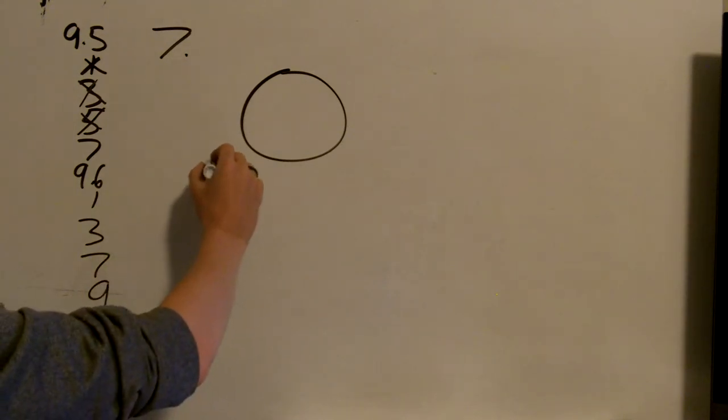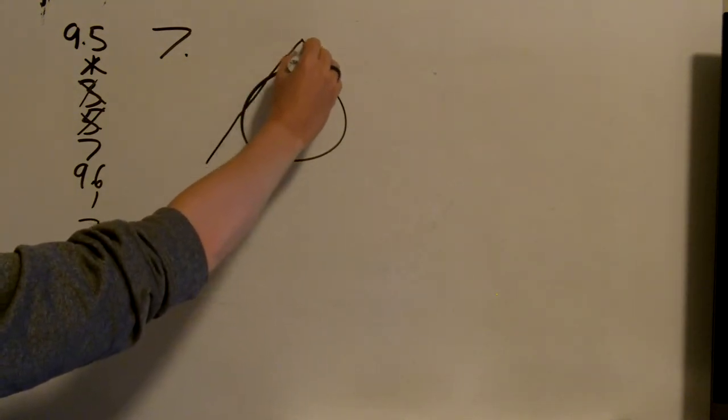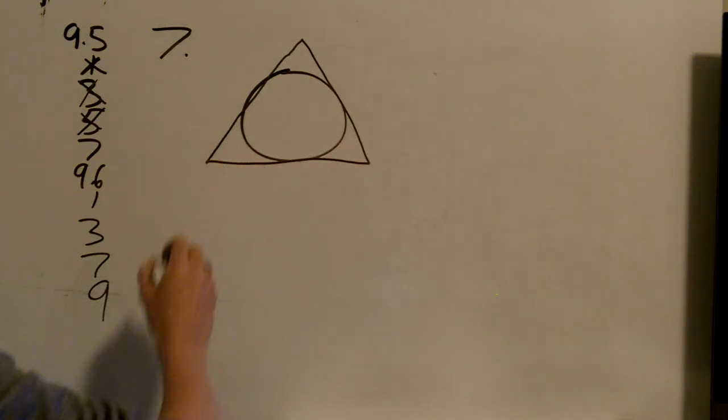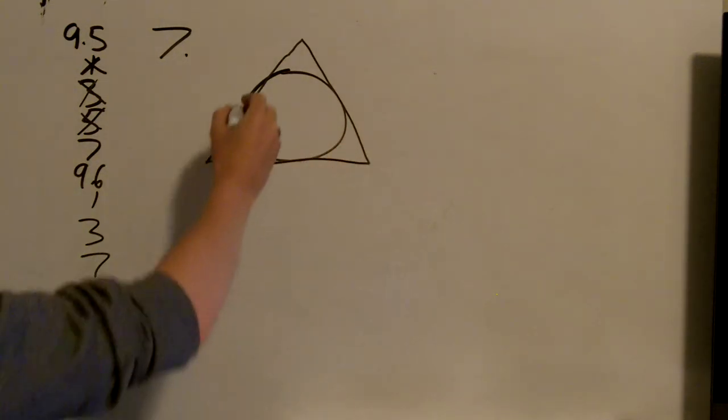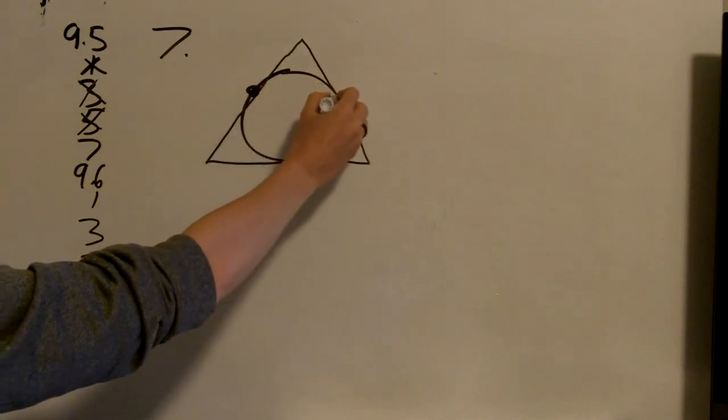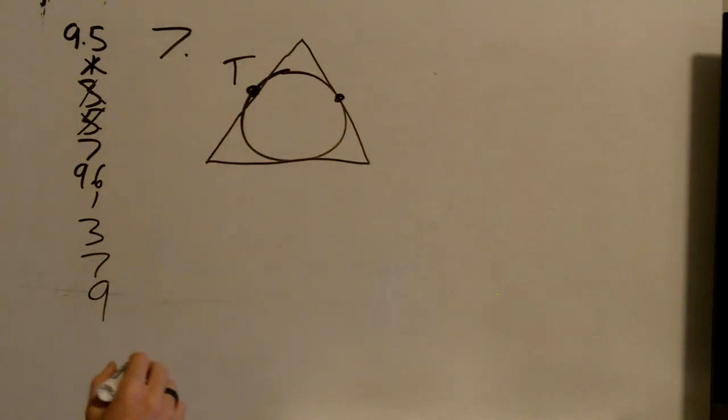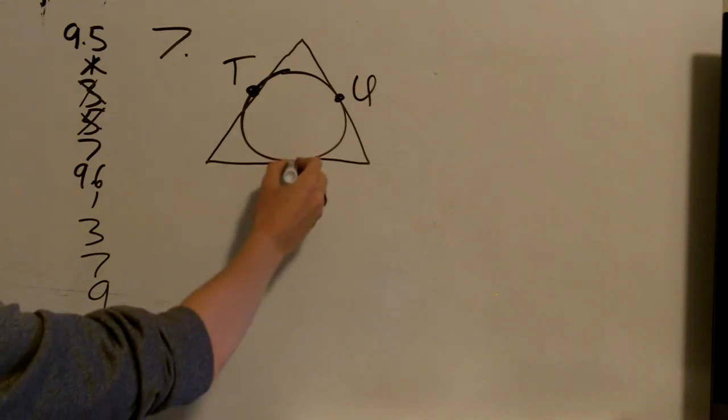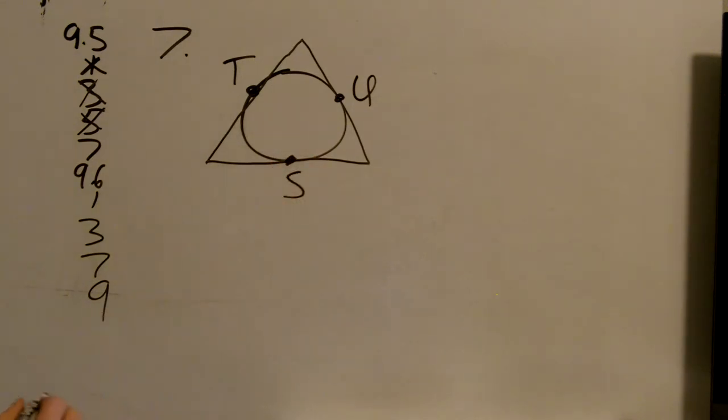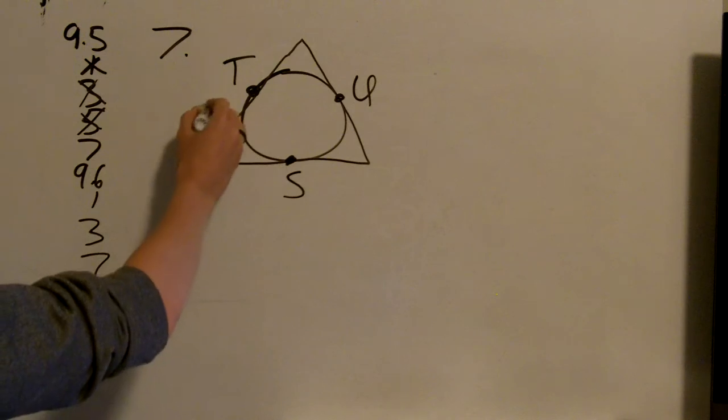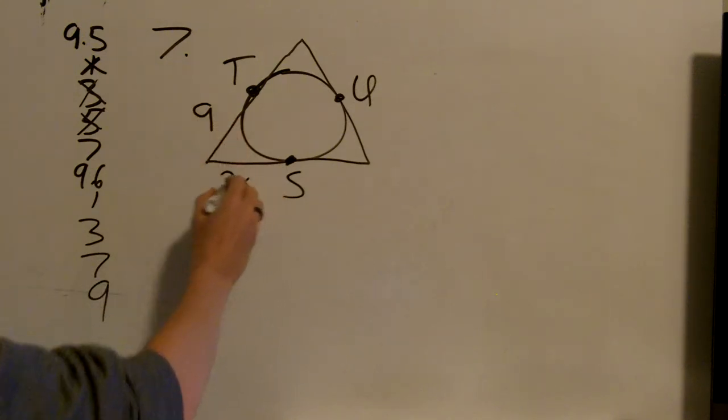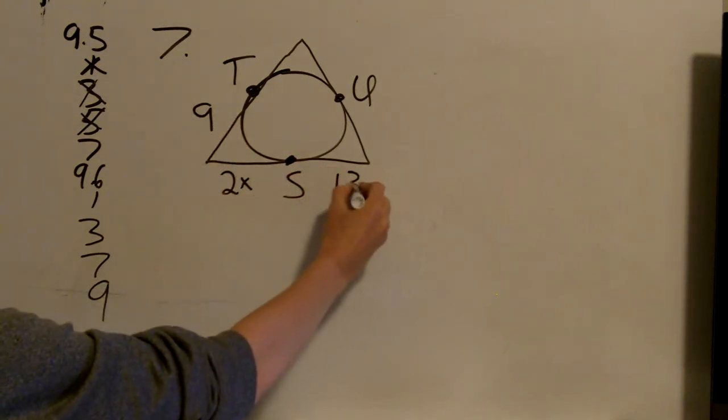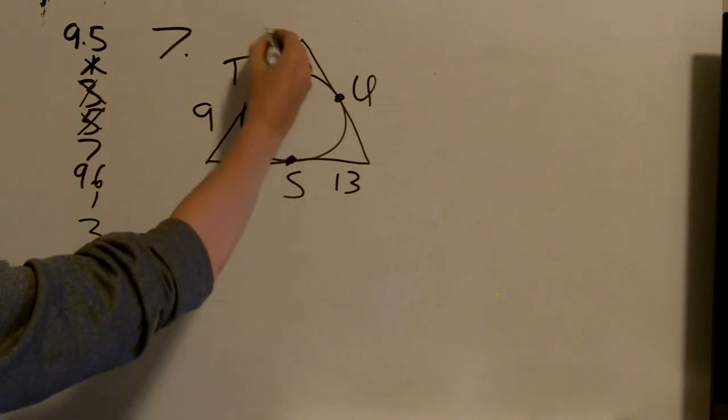We have a bunch of tangents that go along like this. We have t is right here. U is right here. And s is right here. And I know this is 9. This is 2x. This is 13. And this is 4.